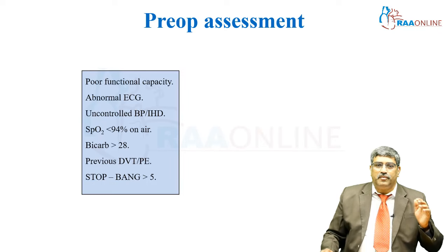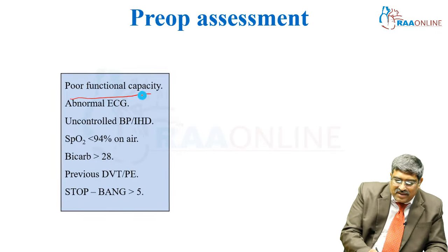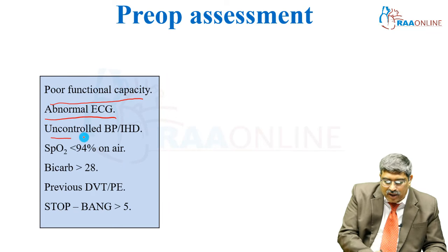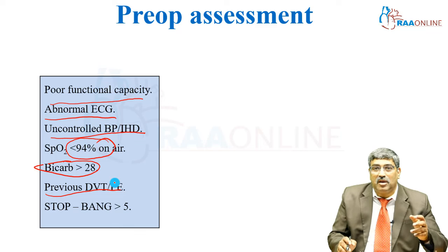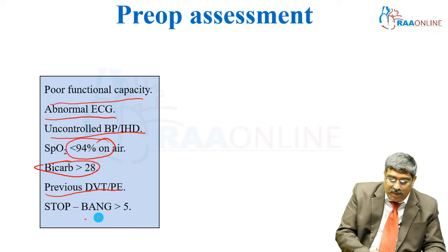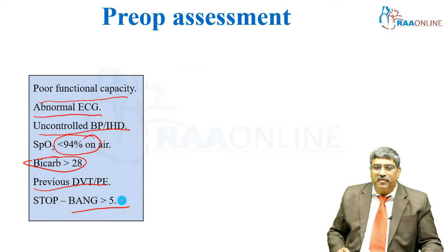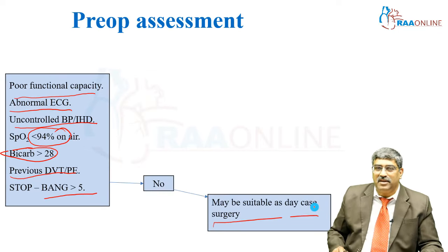Another approach to pre-op assessment considers poor functional capacity, abnormal ECG, uncontrolled blood pressure, saturation less than 94%, bicarbonate greater than 28, previous DVT or pulmonary embolism, and STOP-BANG score greater than 5. If none of these are present, the patient may be suitable for day-case surgery.